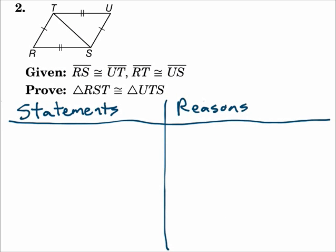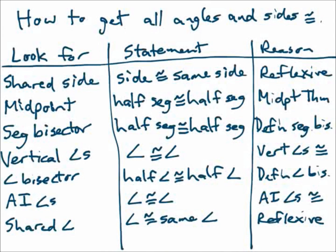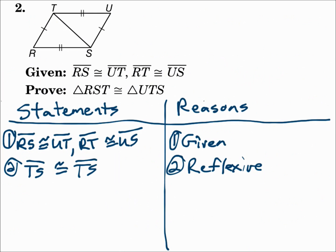Let's do a proof. Number two: given segment RS is congruent to segment UT and segment RT is congruent to segment US, prove that triangle RST is congruent to triangle UTS. Start with what you're given: segment RS is congruent to segment UT, and segment RT is congruent to segment US — the reason is given. That's two pairs of sides. Since we're thinking about the SSS postulate, we need a third pair of sides. Looking at the chart, the triangles share a side, so segment TS is congruent to segment TS by the reflexive property.